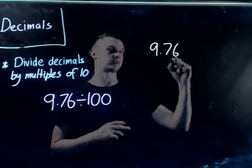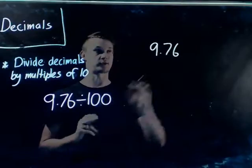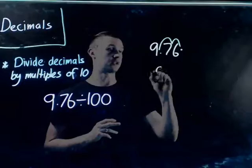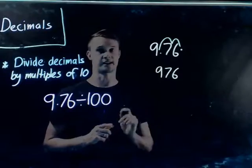So, for example, if we times this by 100, there's two zeros in that, we just moved the decimal place two spots to the right, so our answer was 976.